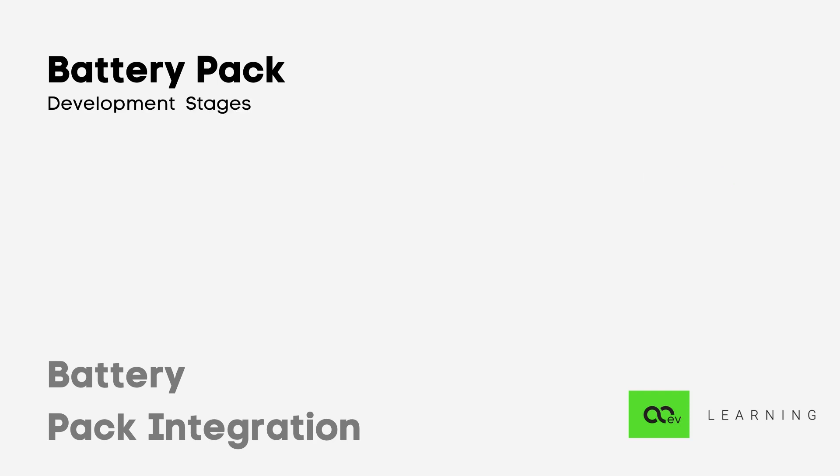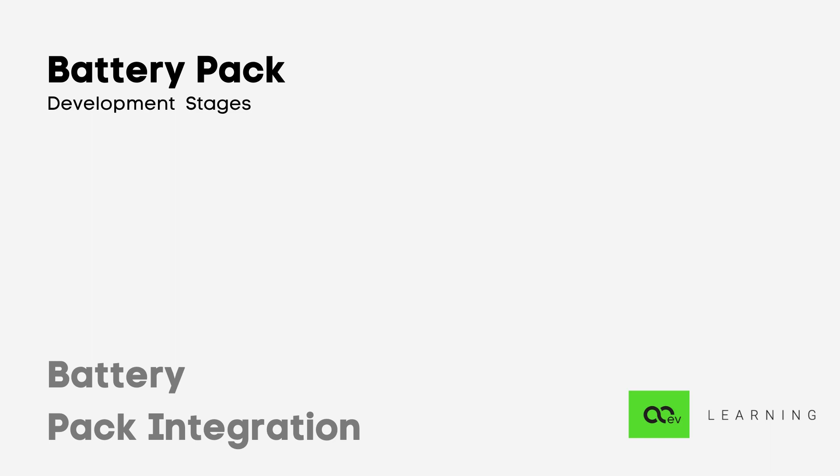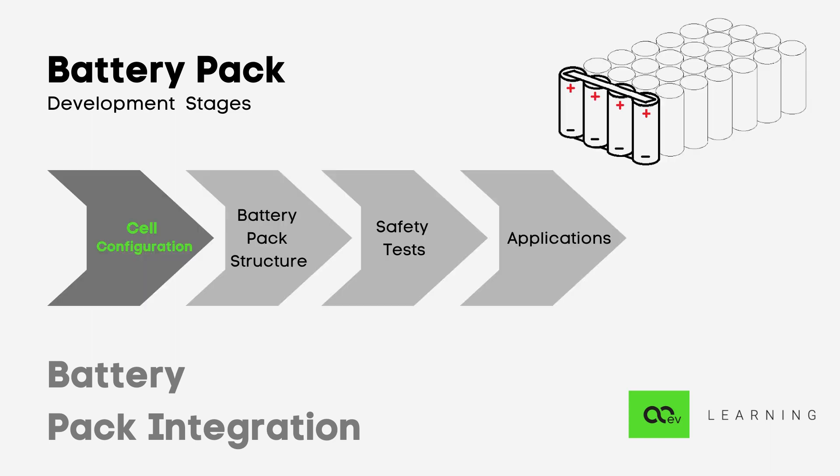Now, what are the various stages in battery pack design and development? First comes cell configuration. Before starting the battery pack design, we must consider the parallel and series configurations of the cells so as to finalize the dimensions of the battery pack casing. Configuring parallel cells first is the most used approach while designing a battery pack, as we have seen in the battery pack sizing session.